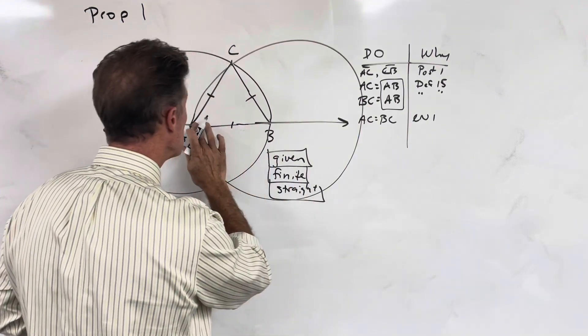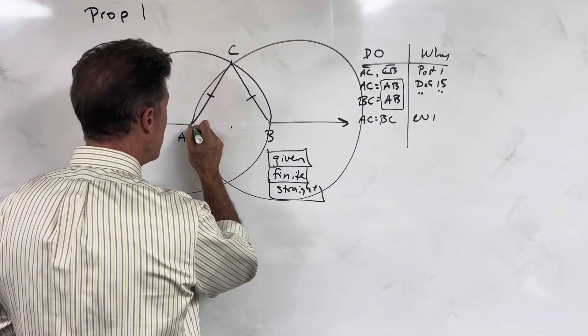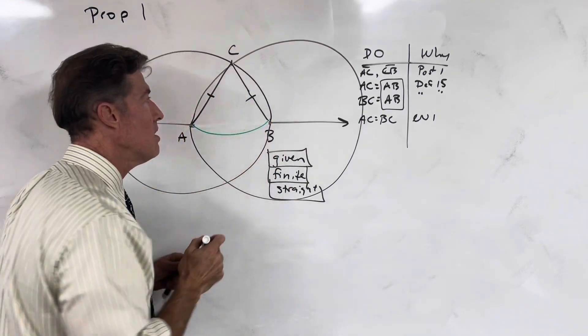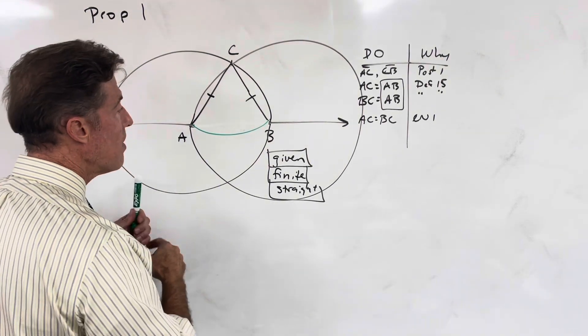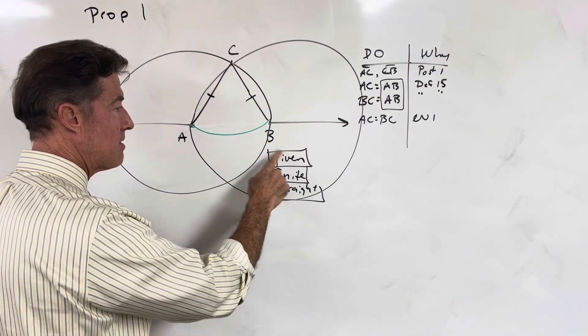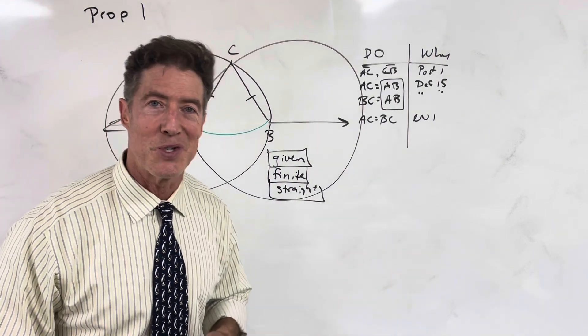Why does it have to be straight? Well, if it isn't straight, let's say it's a curve, then one of the sides of our triangle is going to be curved, and that does not satisfy the definition of a triangle. Therefore, our lines have to be given finite and straight. So on a given finite straight line to construct an equilateral triangle.